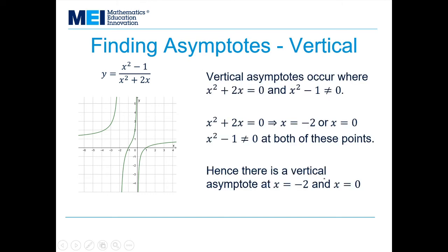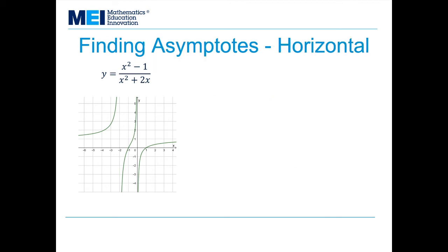Vertical asymptotes occur where x squared plus 2x equals 0 — that's the denominator — and x squared minus 1 is non-zero — that's the numerator. Solving x squared plus 2x equals 0 gives x equals negative 2 and x equals 0. Checking that x squared minus 1 is non-zero at both of these points confirms there is a vertical asymptote at x equals negative 2 and at x equals 0.